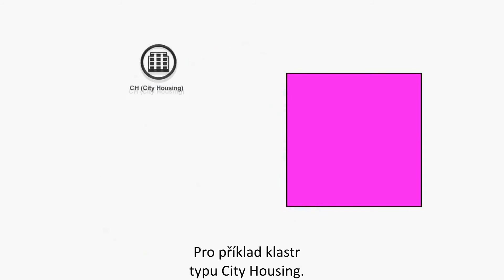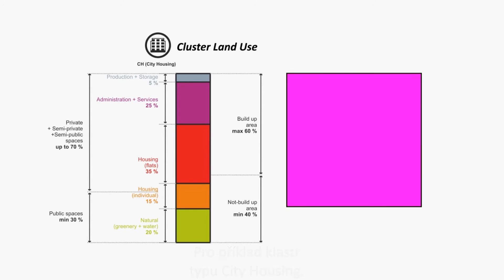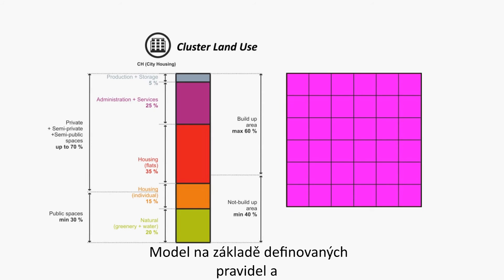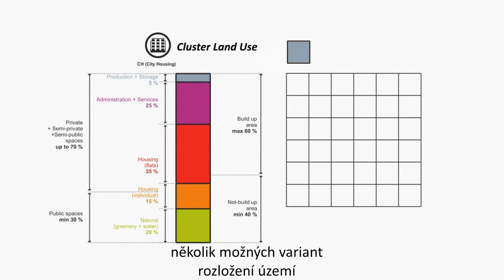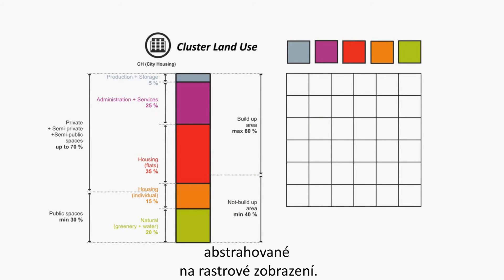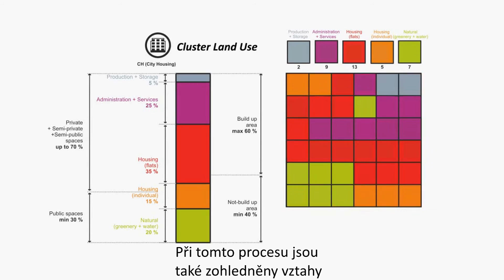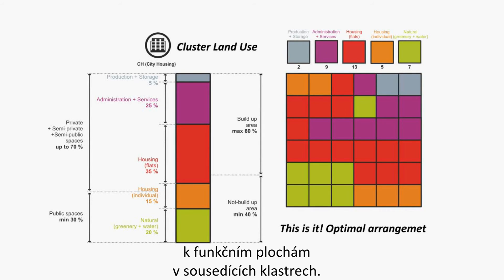For example, cluster type: city housing. Models based on defined rules and relationships between the various land use areas generate several variants of territory arrangement, abstracted to a raster display. In this process, relationships to land use areas in adjacent clusters are also taken into account.